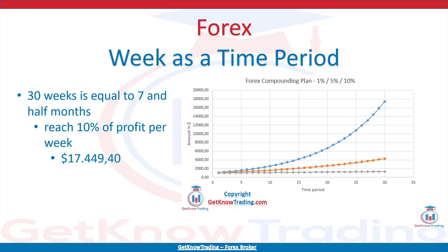With a weekly time period, you have more freedom to make bad trades because you can open more trades per week, with the goal to reach 10% of profit per week. You would then need 30 weeks - equal to 7.5 months - to reach the target of $17,449.40. For a monthly time period, you would need 30 months. For a yearly time period, you would need 30 years to reach the target.